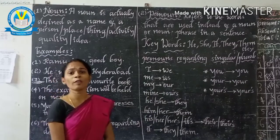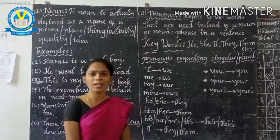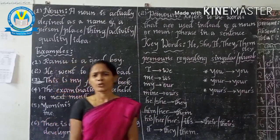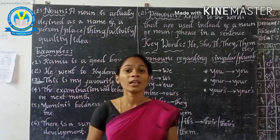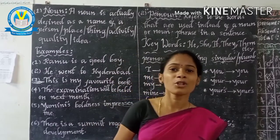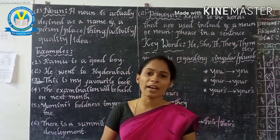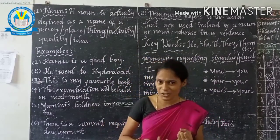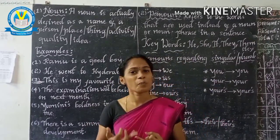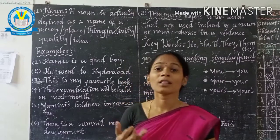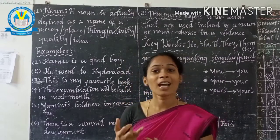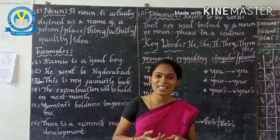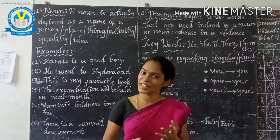Now we will go to the first one: noun. A noun is usually defined as a name of a person, place, thing, activity, quality, or idea.